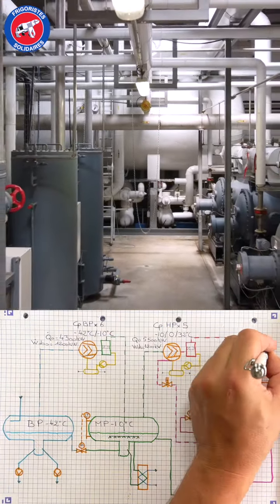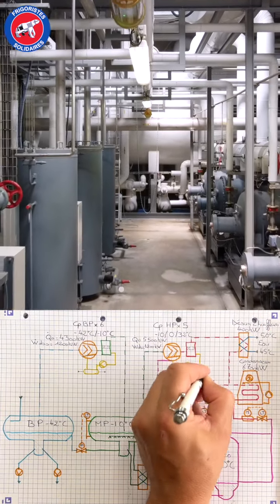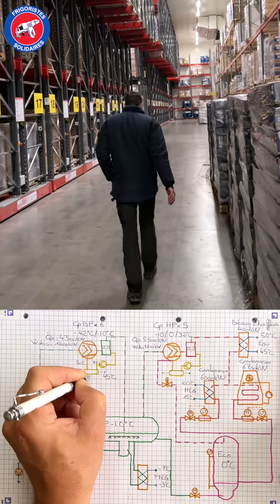Four pumps distribute the refrigerant in the plant to the freezing tunnels and to the cold storage rooms.